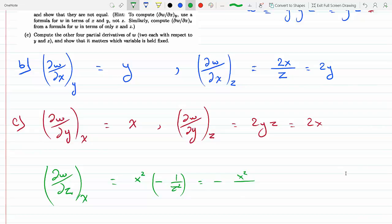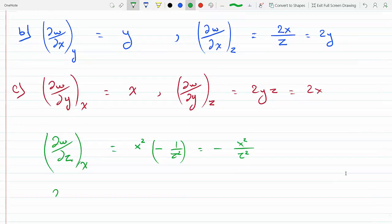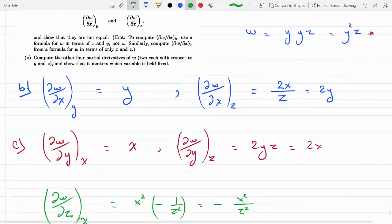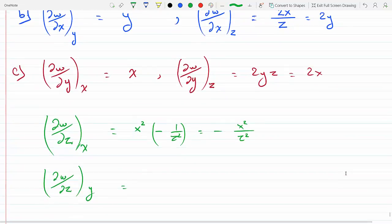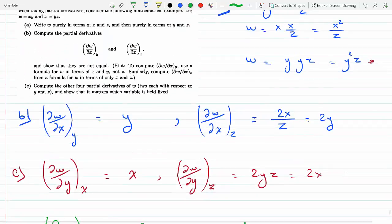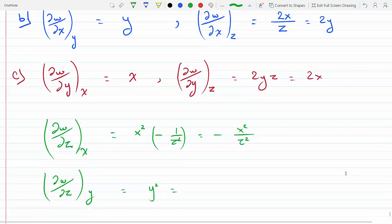Now I will take the same partial but I will hold Y fixed. I'll go off the equation that has Z and Y: Y squared Z. Holding Y fixed, this would be Y squared times 1, which is Y squared. What is Y with respect to X and Z? From the given equation, Y is X over Z, so this becomes X squared over Z squared. Notice there's a minus sign here that's not here, so these two partials again are not the same.